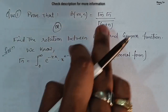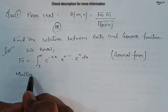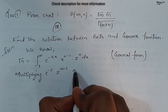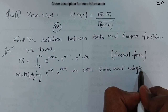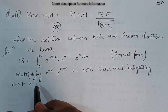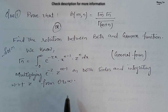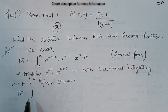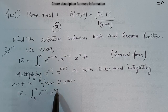Here we have gamma n, but we need gamma m into gamma n. So we have gamma n using x to the power n minus 1. Multiplying e to the power minus z into z power m minus 1 on both sides, and then integrating with respect to z with the limit from 0 to infinity. You will get: gamma of n into integration from 0 to infinity of e to the power minus z into z power m minus 1 dz.